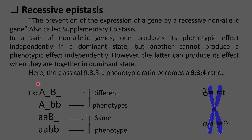Looking at the genotypes: when both dominant alleles are present, a distinct phenotype is produced; when only one dominant allele is present, a different phenotype is produced. When the A locus alleles are in homozygous recessive condition, B cannot produce its phenotypic character alone. As a result, when A alleles are recessive, the phenotypes produced are the same irrespective of the genotype of the B alleles.